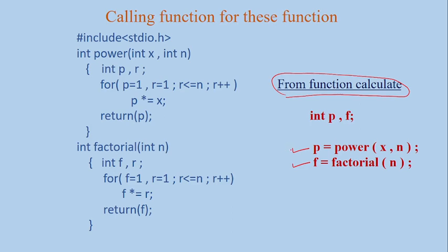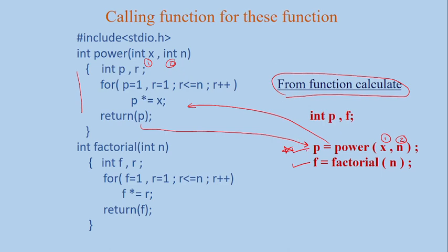When the power statement is executed, it will go to execute the power function — it passes two values: value of x and value of n. It will execute and return the value of p back here. Then it executes the next statement for factorial. We are passing value of n, so this value is taken into n. The factorial function executes completely and return f — the value of f comes back here.